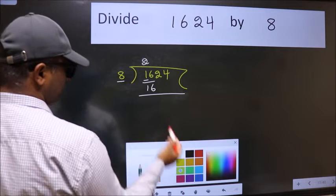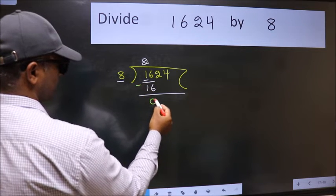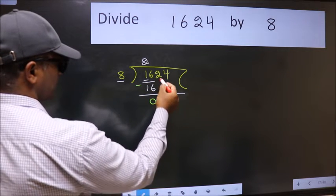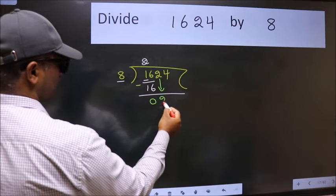Now, we should subtract. We get 0. After this, bring down the beside number. So, 2 down.